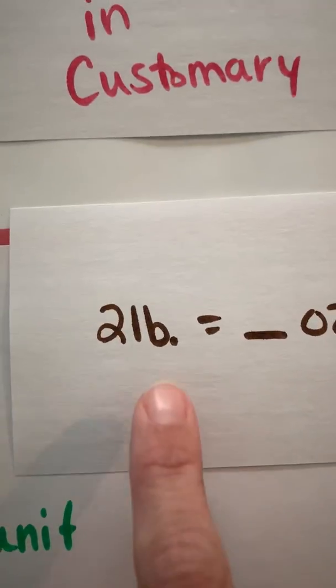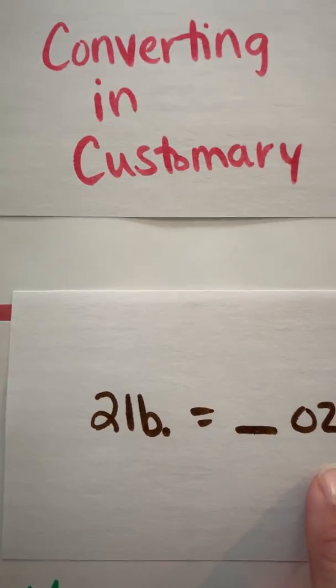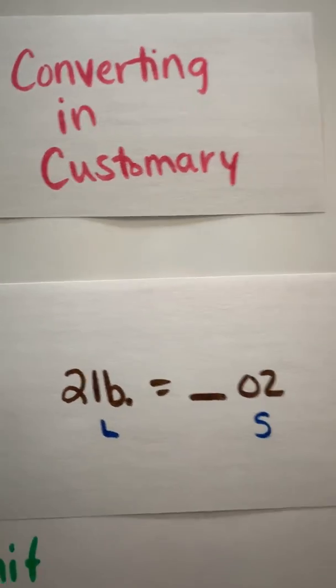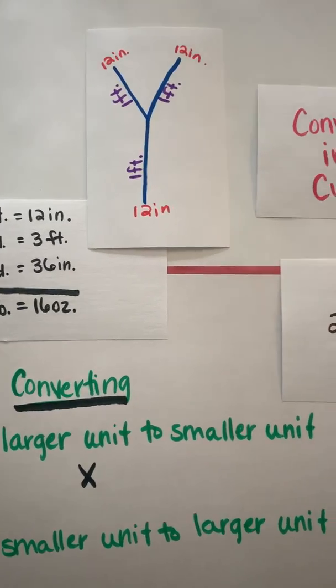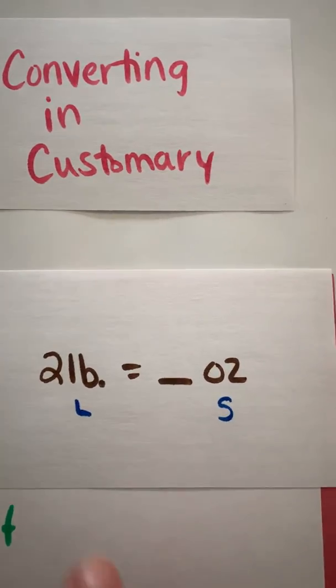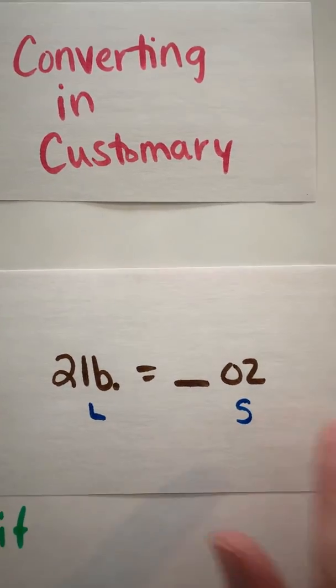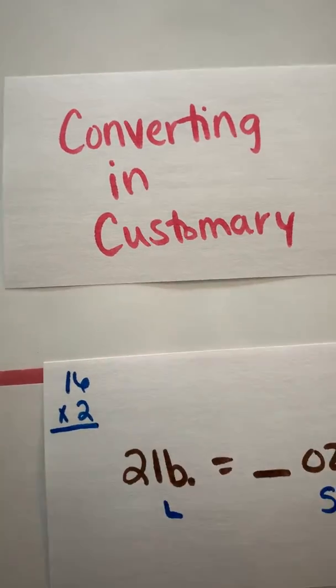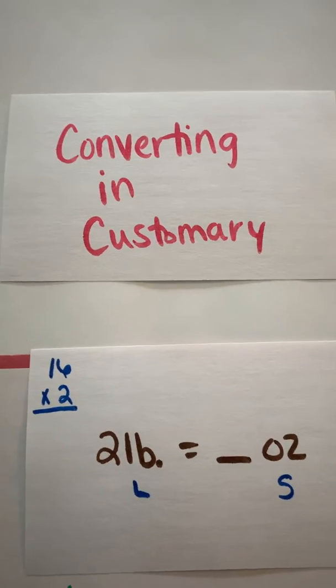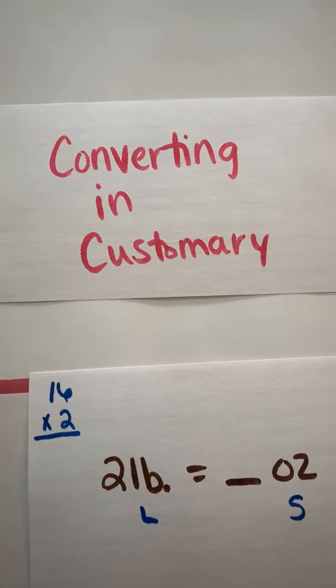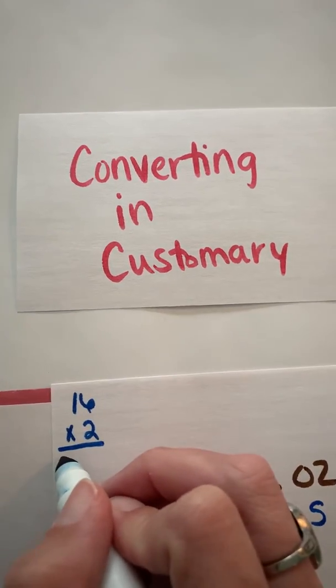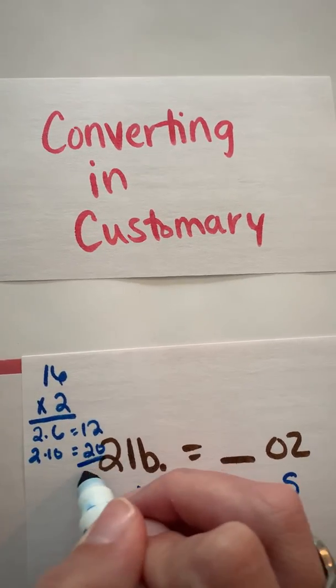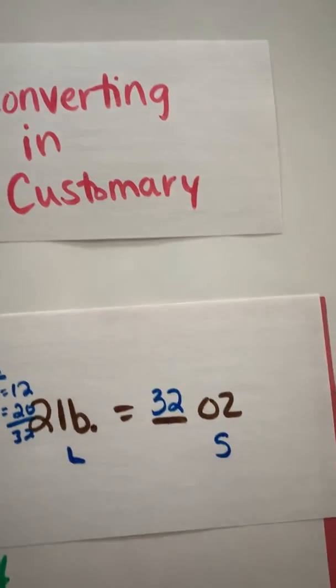So once again I'm starting with what I know. I know two pounds and I'm changing to ounces. So I'm starting with my larger unit and converting to a smaller unit. And once again we learned in fourth grade that when we convert from a larger unit to a smaller unit we multiply. So if I am changing from pounds to ounces, I know that 16 ounces are in a pound. So I'm going to multiply 16 times 2. If you know your facts you would know that that is 32, but you could also think of that as 2 times 6 is 12 and 2 times 10 is 20, which together gives me 32 ounces.